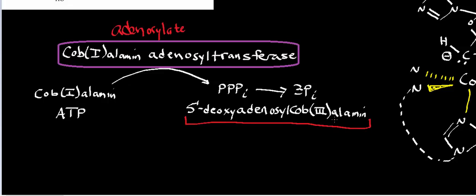Methylmalonyl-CoA mutase is ultimately used to degrade molecules of propionyl-CoA — those are things that can be produced through beta oxidation of odd-number carbon fatty acids. So B12 is important for that. This is not the product used in methionine synthase — we have a whole video on methionine synthase, which I recommend you watch if you're interested in B12 — but this form is used in methylmalonyl-CoA mutase.